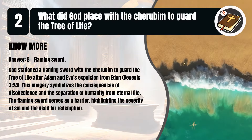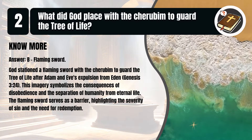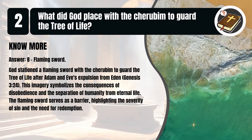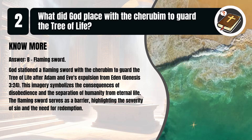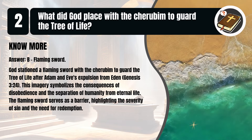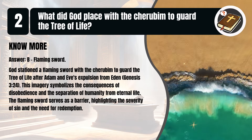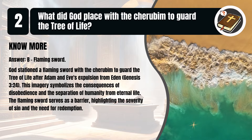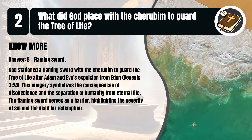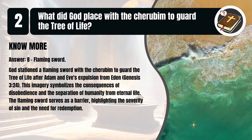That's B. Flaming Sword. God stationed a flaming sword with the cherubim to guard the tree of life after Adam and Eve's expulsion from Eden. Genesis, chapter 3, verse 24. This imagery symbolizes the consequences of disobedience and the separation of humanity from eternal life. The flaming sword serves as a barrier, highlighting the severity of sin and the need for redemption.